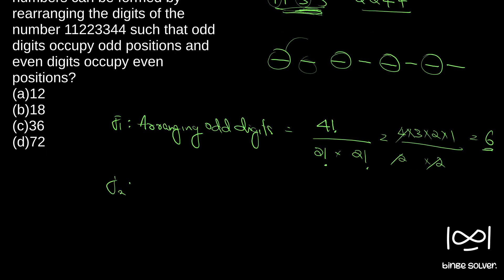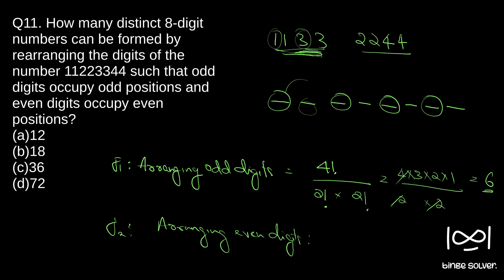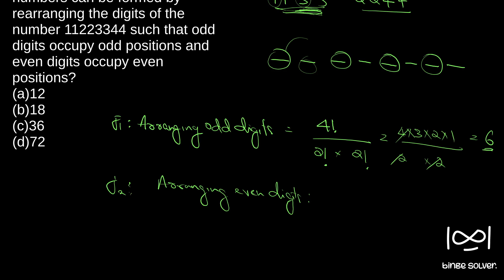Now our next Job 2 is arranging even digits. Since arranging even digits is also the same, we have 4 digits, we have 4 places to arrange, and 2 digits are repeating 2 times exactly like the first case. So it will be the same formula and our answer will be 6.